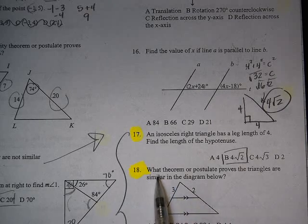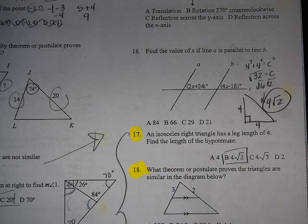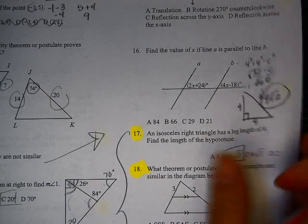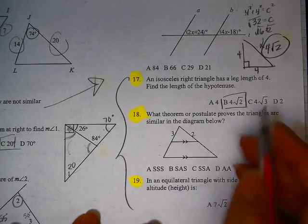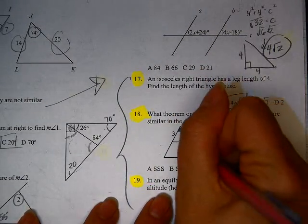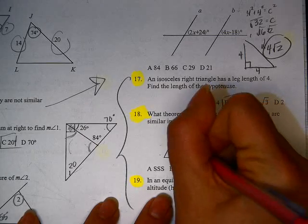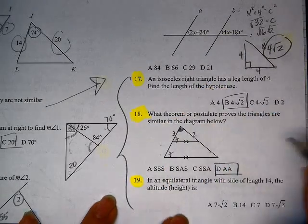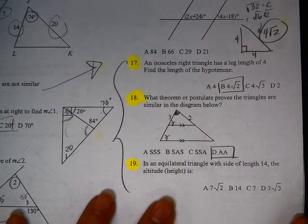All right. Number 18. What theorem or postulate proves that they are similar? Whew! I don't have much here, folks. I have 3. I have 2. I don't have anything about these guys down here. But what I do have is an angle there, which is reflexive. And I do have parallel lines here, which gives me corresponding angles. So AA is really our only option there.